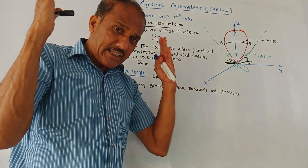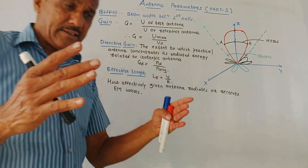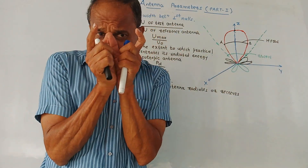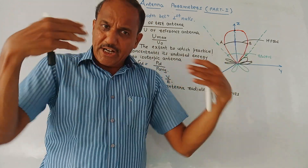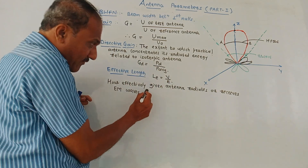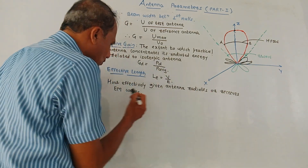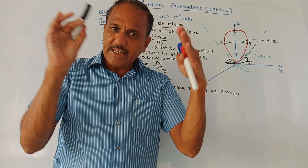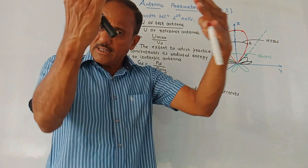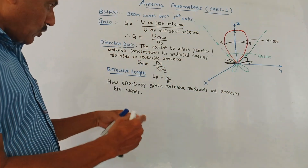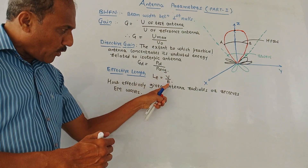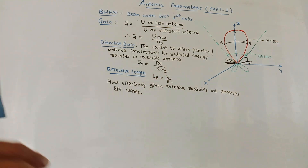Next is effective length. The total length of an antenna will be different, but only a particular part of that length is useful for radiation — that is the effective length. It gives an indication of how effectively a given antenna radiates or receives electromagnetic waves. There are two types of antennas: transmitting and receiving. Effective length is denoted by LE, which is the ratio of V (voltage) to E (electric field intensity).